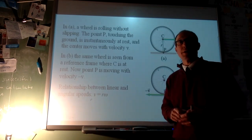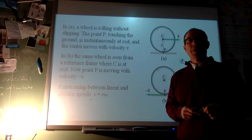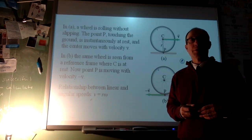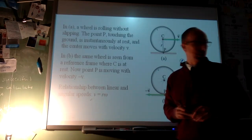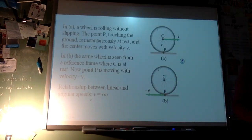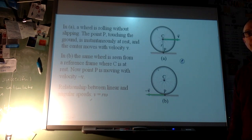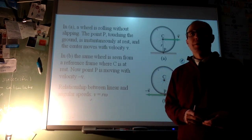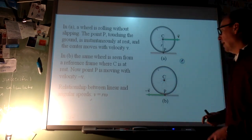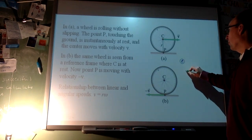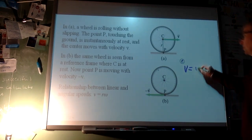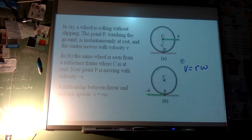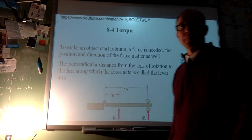Hello diplomats — going to go over the notes you're missing while you're solving world peace at case. Looking at where we left off: the connection between angular and linear velocity. As long as we don't have slipping, we know that the velocity is going to be equal to the radius times the angular velocity.